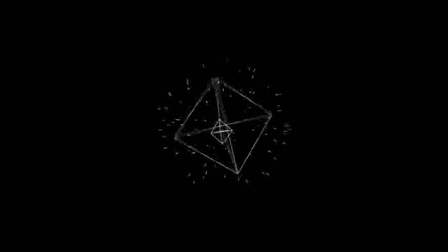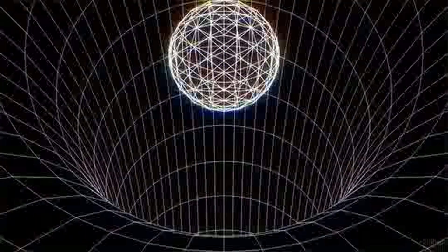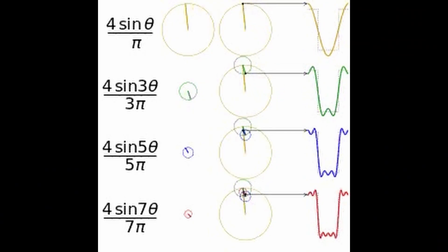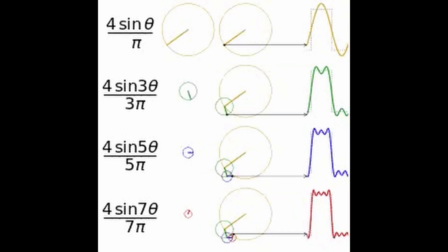The FFT works by exploiting the symmetry and periodicity properties of the complex exponential functions. It divides the input sequence into smaller sub-sequences, and then combines them using a formula called the butterfly operation. The FFT can be implemented using different methods, such as the radix-2, radix-4, or mixed-radix algorithms. The most common FFT algorithm is the Cooley-Tukey algorithm, which uses a divide-and-conquer approach to recursively break down the sequence into pairs of even and odd samples.